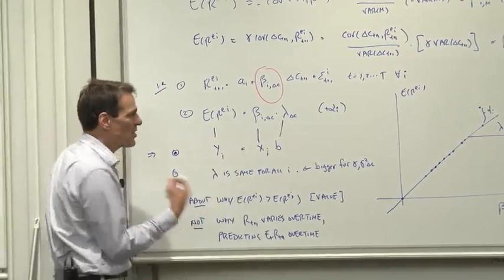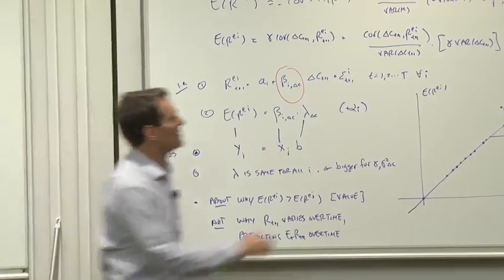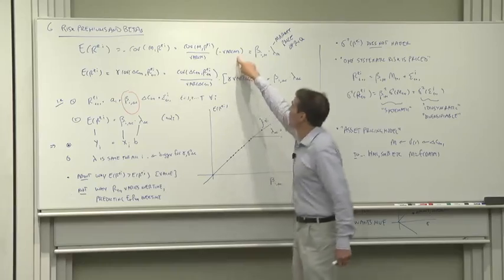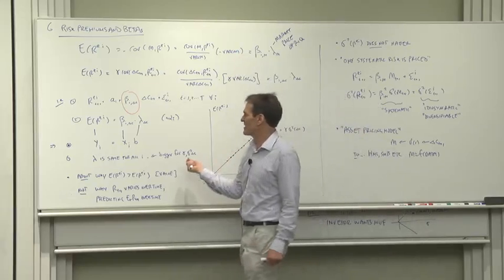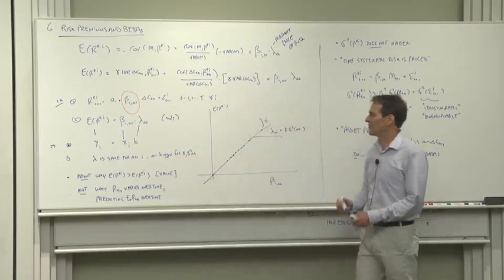Another way of seeing the difference, lambda, the market price of risk, is the same for everybody. There's no i in here. There's no i in there. Beta is the thing that's different from one asset for another.